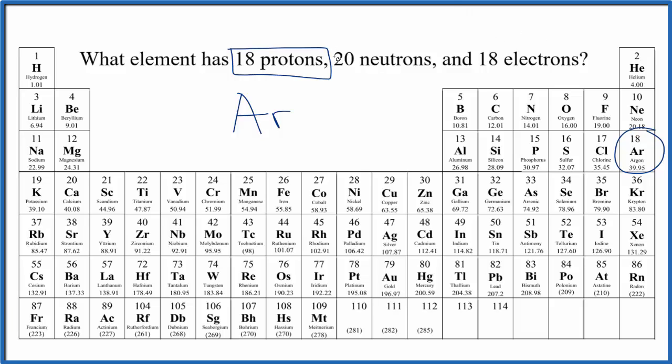If you had a sample of argon atoms, all of them would have 18 protons, but they could have different number of neutrons. We call those isotopes.